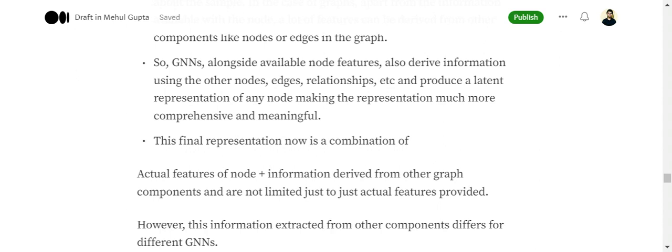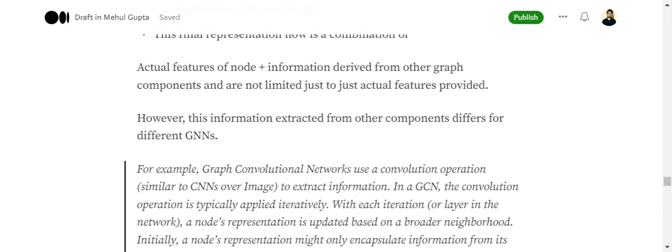In traditional ML, you're just using the features provided, but in GNNs you're also adding information from the graph as a whole, from its neighbors, from the relationships. The final representation that we're inserting in a GNN becomes the actual features of the node plus information derived from other graph components. Hence the information provided for that particular sample X is enhanced, and you'll get better results. Though you can use traditional ML algorithms, GNNs would give you better results.